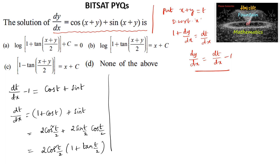So we get 2cos²(t/2) times (1 + tan(t/2)), which equals dt/dx. Now separating the variables, we can write secant²(t/2) divided by 2(1 + tan(t/2)) dt = dx.